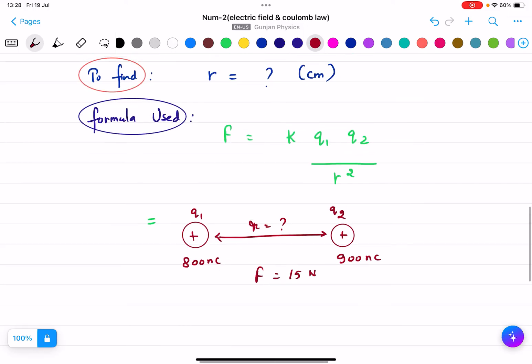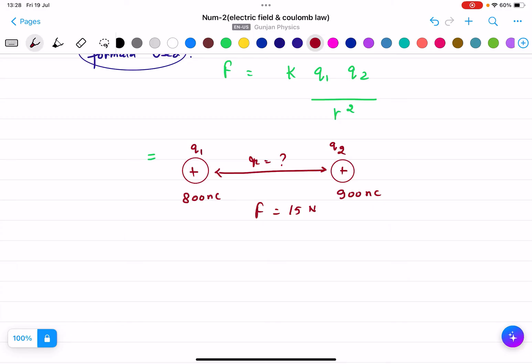We will just directly place the values in the above formula. So if we place the values, it will be force is 15, K we know that 9 into 10 to the power 9, Q1 800 into 10 to the power minus 9 coulombs, Q2 900 into 10 to the power minus 9 coulombs upon R square.